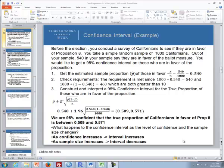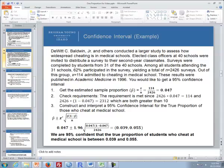Hello, this is Brother Krummer from the math department. This is a continuation of lesson 17 dealing with inference for one proportion. Where we last left off is that we were constructing a confidence interval of the true proportion of Californians in favor of Proposition 8. And so let's go through another example.